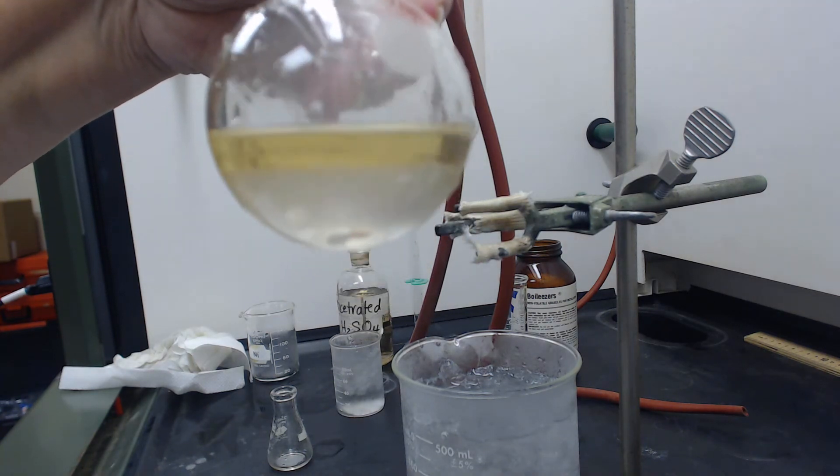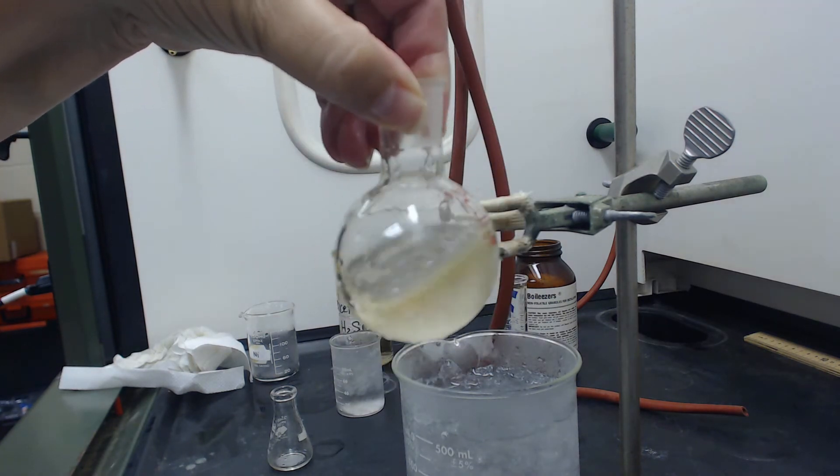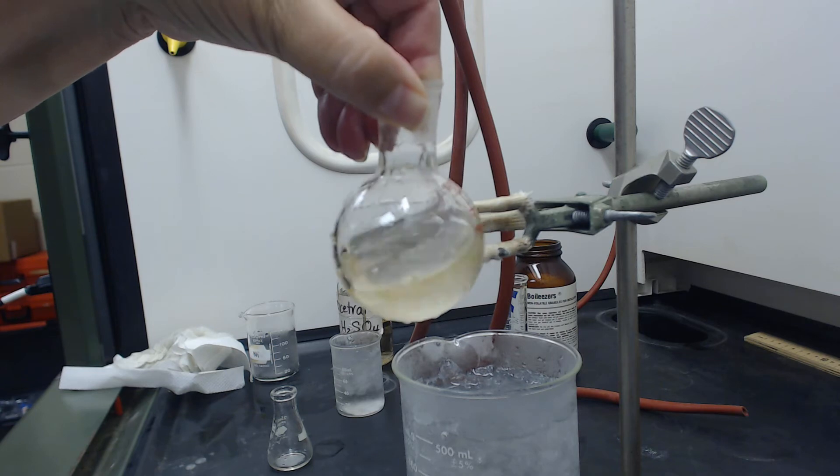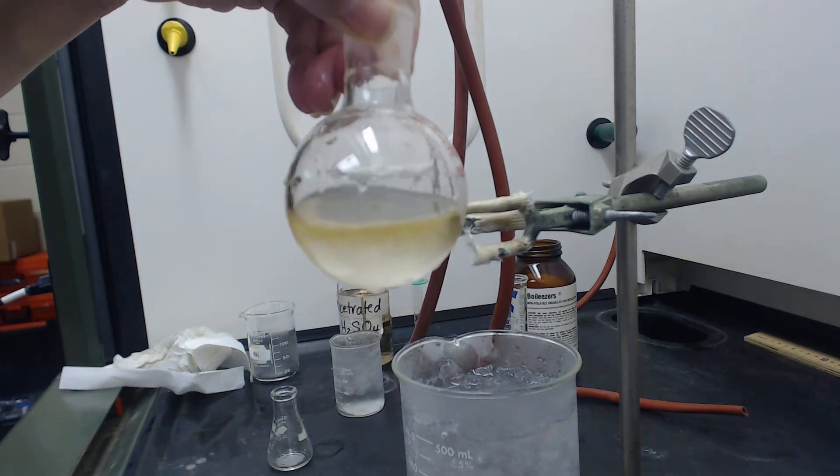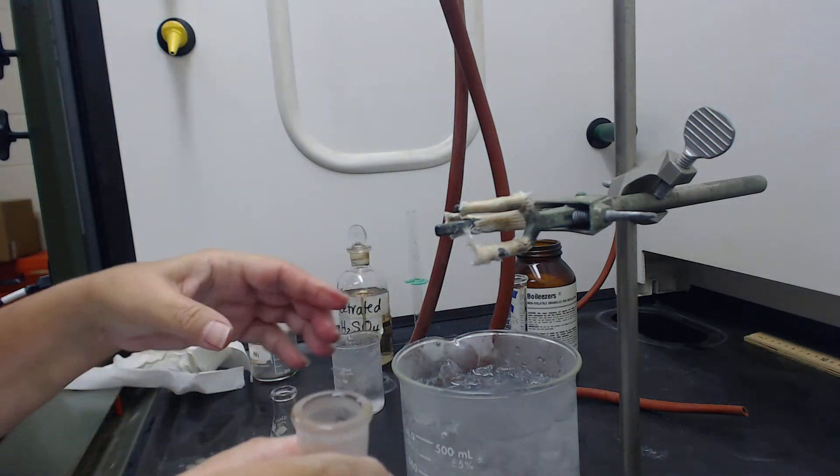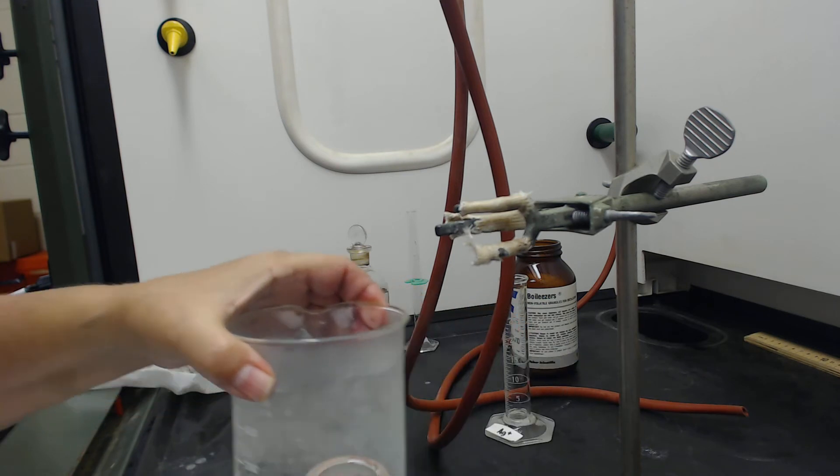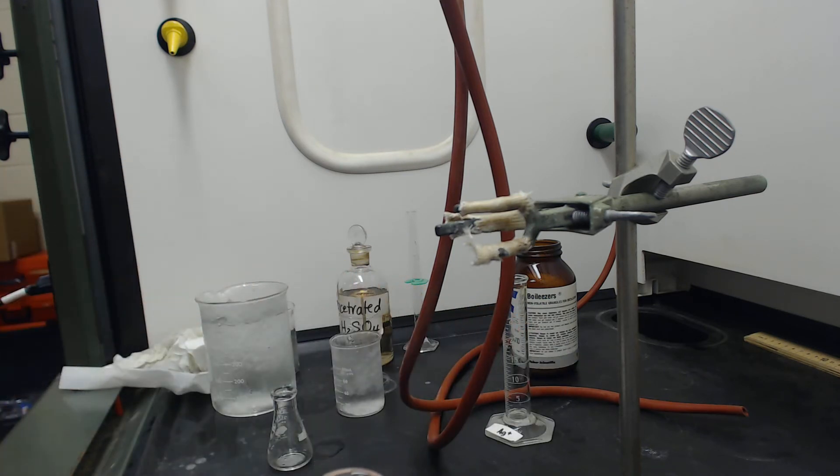All right, so I've added all the sulfuric acid. You may or may not be able to tell, but there's actually two layers there. We're going to swirl it a little bit, but that's all right because we're going to reflux it. We're going to boil it together.